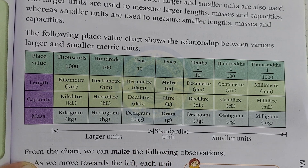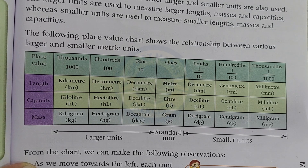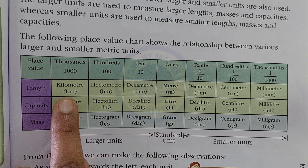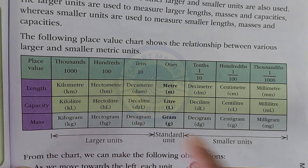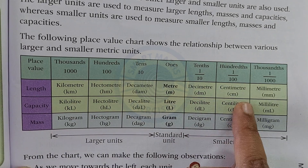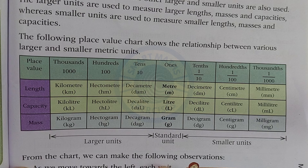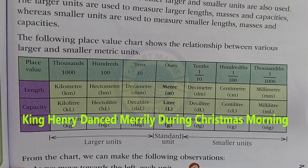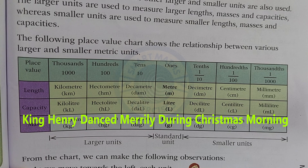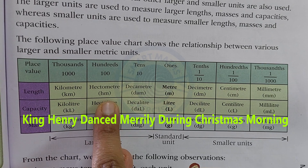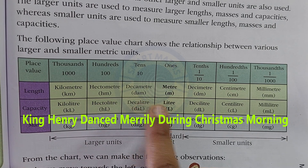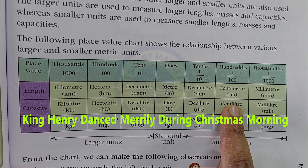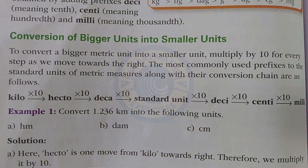This chart shows the relationship between larger and smaller metric units. The standard units are meter, liter, and gram. The larger units are kilometer, hectometer, and decameter, and the smaller units are decimeter, centimeter, and millimeter. To remember this chart, we use the mnemonic: King Henry Danced Merrily During Christmas Morning — where kilometer is King, hectometer is Henry, decameter is Danced, meter is Merrily, decimeter is During, centimeter is Christmas, and millimeter is Morning.